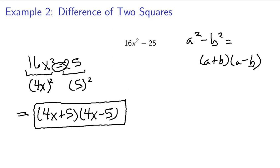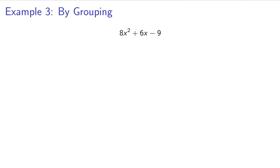All right. Let's look at example 3, factoring by grouping, which sometimes seems scary to some people, but it's really not that scary. So, whenever we have this 8x squared plus 6x minus 9...